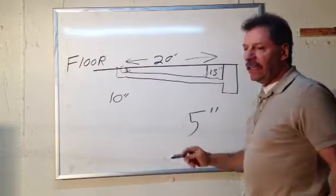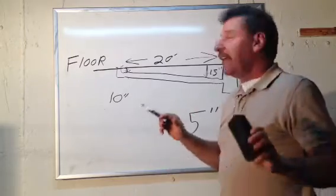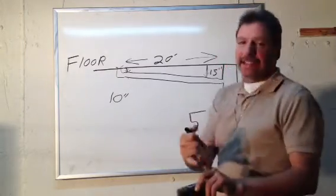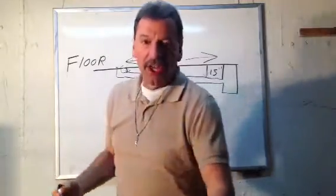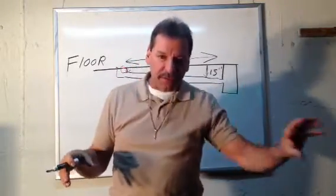And on a 20 foot run, that's a quarter inch per foot. That's how you do it. That's how you're going to run all your waistlines so they don't clog up and they continuously flow.